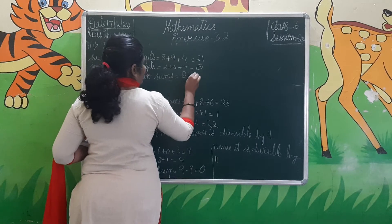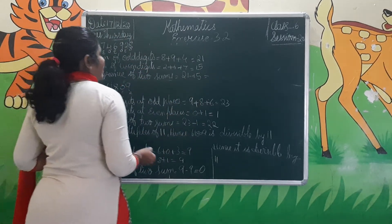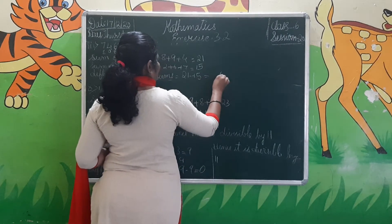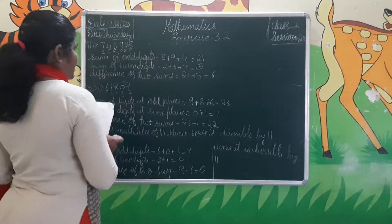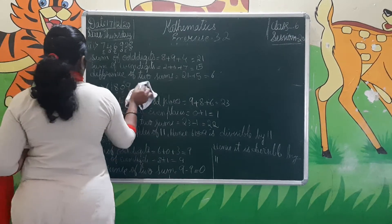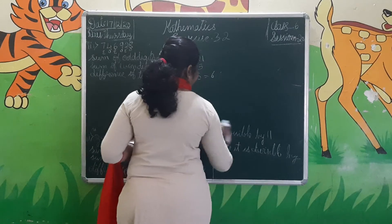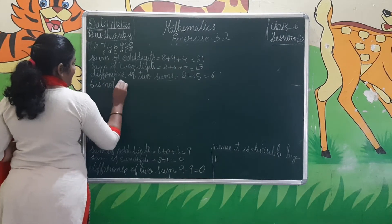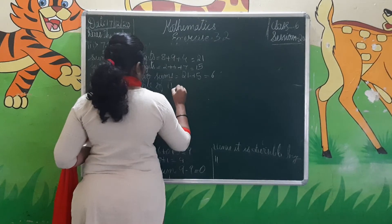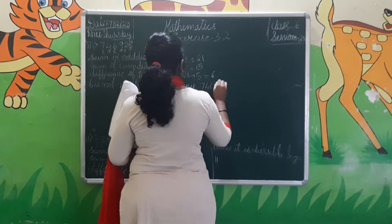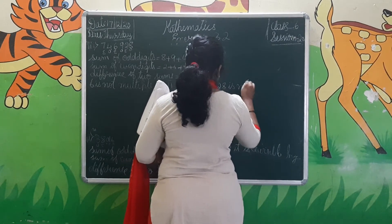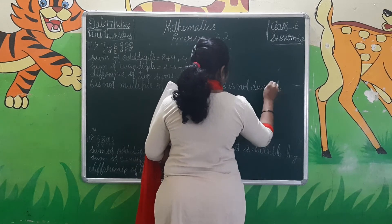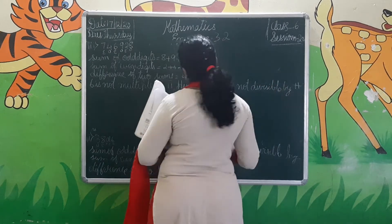Difference of 2 sums: 21 − 15 = 6. Is 6 a multiple of 11? No, it is not. Therefore 7,46,928 is not divisible by 11. Remaining 4th, 5th, and 6th problems are homework.